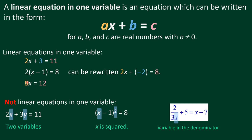It can also be written as 2 times the quantity x minus 1, equals 8. By distributing: 2 times x gives 2x, and 2 times negative 1 gives negative 2, so 2x minus 2 equals 8. That is also a linear equation. Another example: 8x equals 12 — same thing.